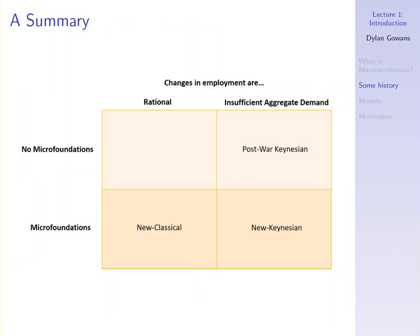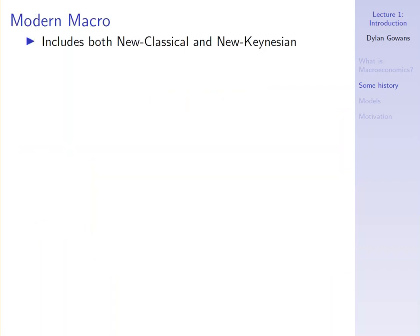In other words, the reason why labor markets aren't clearing at any point is that wages aren't adjusting to clear the labor market. If that doesn't make sense immediately, that's okay — we're going to go into it in detail throughout the course. Importantly for us, the brand of economics we're going to focus on is that brand with micro foundations. This course really looks at new classical economics and new Keynesian economics — models that have micro foundations built from the ground up, starting with microeconomic optimization by firms and consumers. We're not going to be dealing with post-war Keynesian economics.